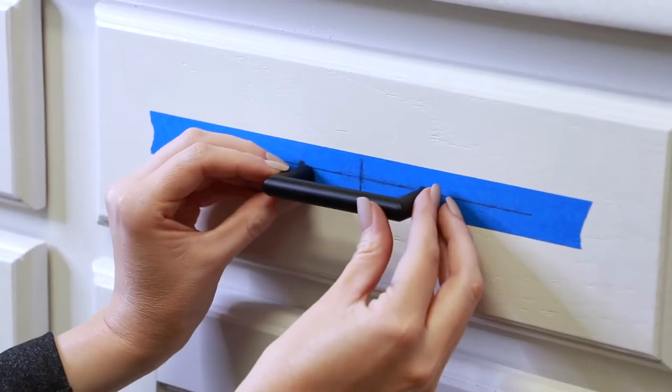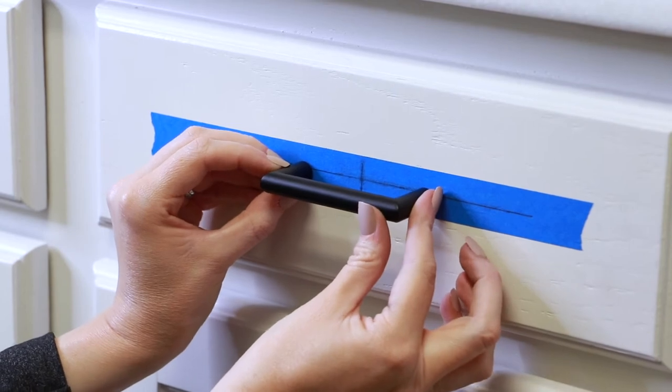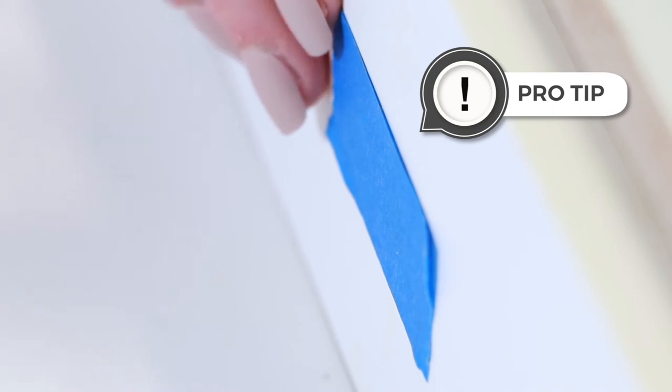Check your marks by holding your new pull up to the drawer. All good here. We're ready to drill. Put a piece of painter's tape on the back of the drawer where the holes will be. This keeps the drill bit from splintering the wood as it pushes through the drawer frame.